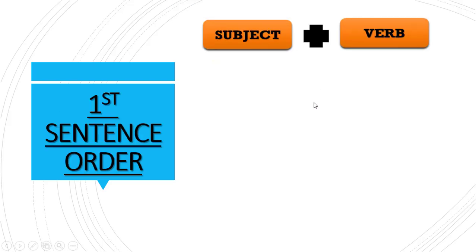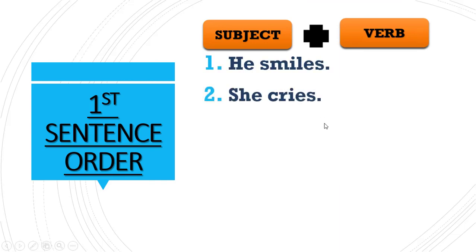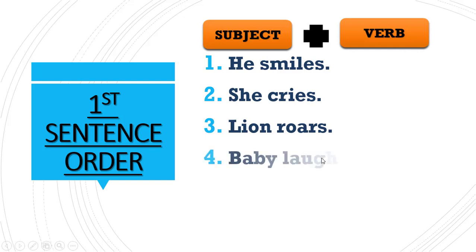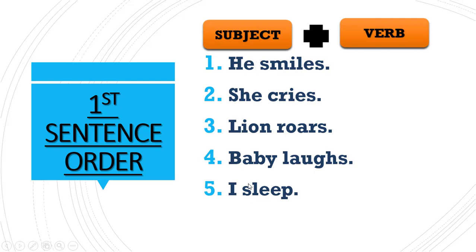The first sentence order is subject plus verb. Examples: 'He smiles,' 'She cries,' 'Lion roars,' 'Baby laughs,' 'I sleep.' In all these sentences there is only a subject and a verb — no object is needed.